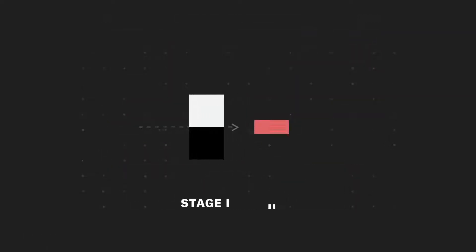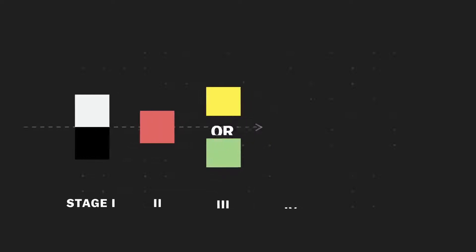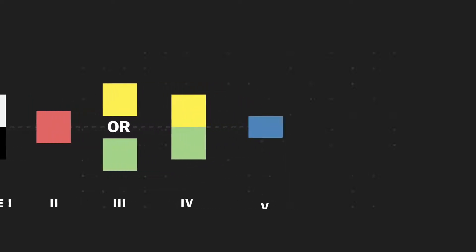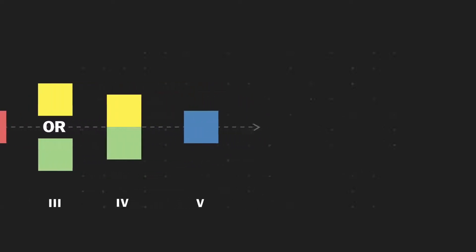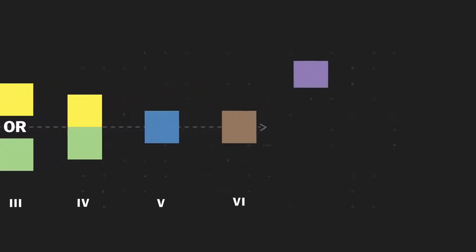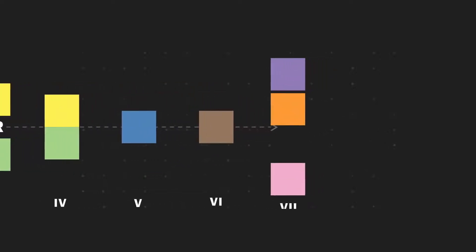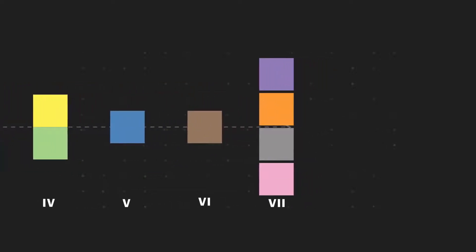First black and white, then red, then green and yellow, then blue, then others like brown, purple, pink, orange, and gray.